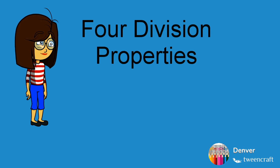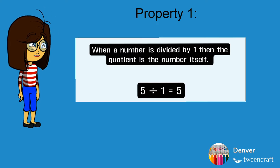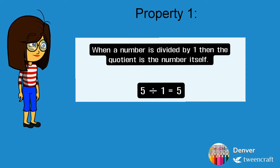Good morning students! Today let us learn about the four division properties. Property one: when a number is divided by one, the quotient is the number itself. Here you can see five divided by one is equal to five.